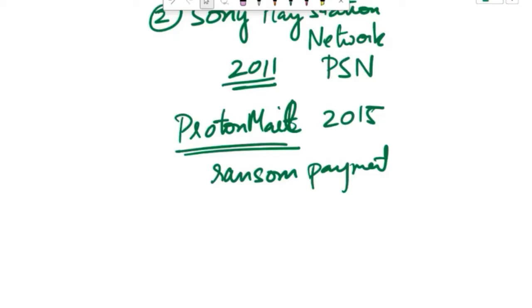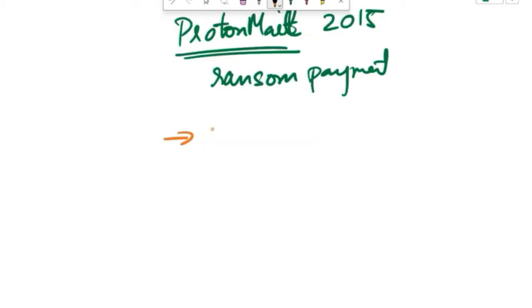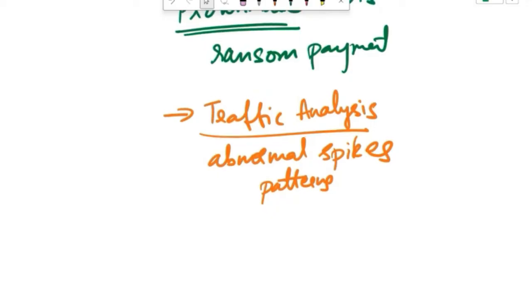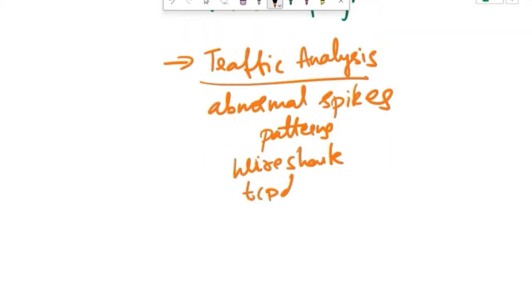Now let's talk about the techniques and tools, the common techniques and tools used for identifying and mitigating these attacks. First one is traffic analysis. Analyzing network traffic patterns can help identify abnormal spikes or patterns indicative of a DoS or DDoS attack. Network traffic analyzers such as Wireshark, tcpdump and NetFlow analyzers can provide real-time visibility into network traffic and help identify anomalies.